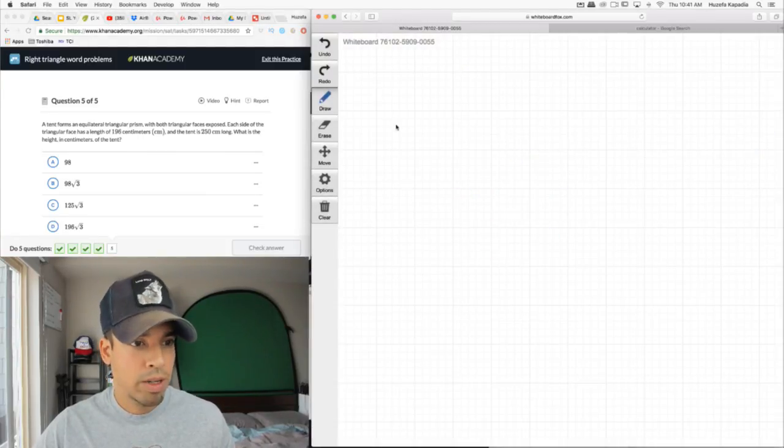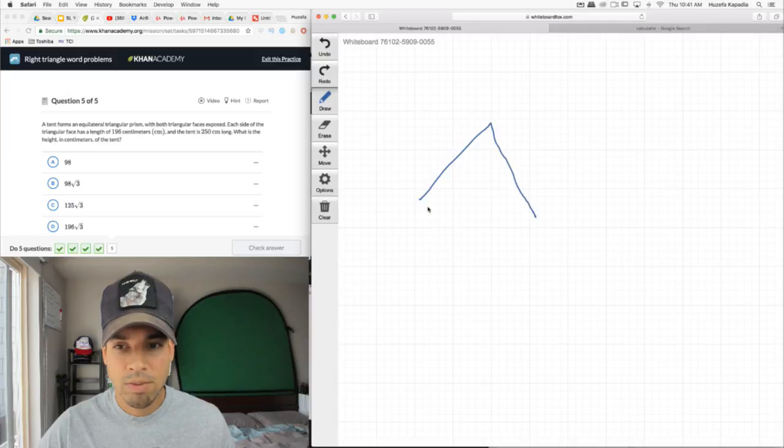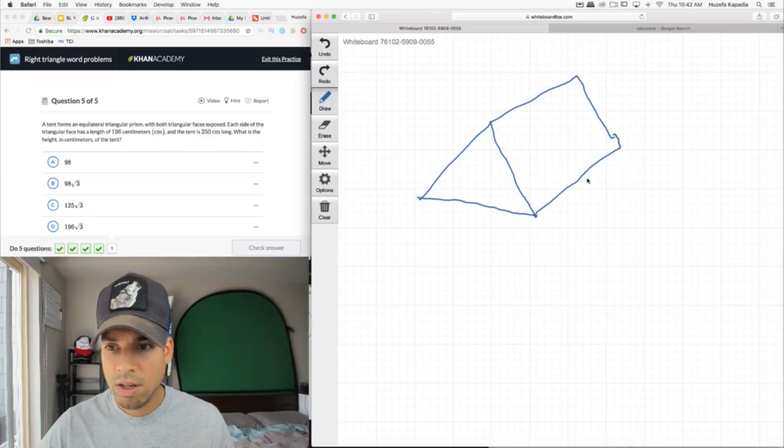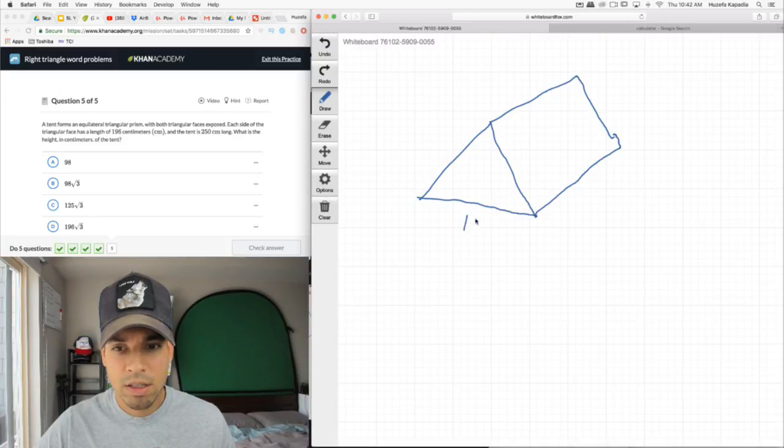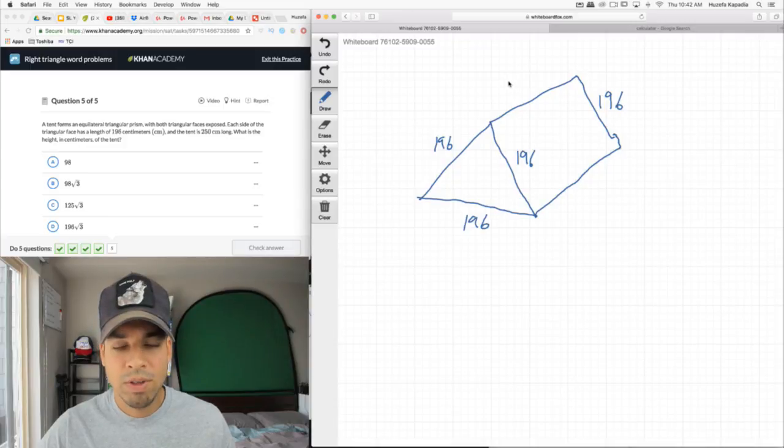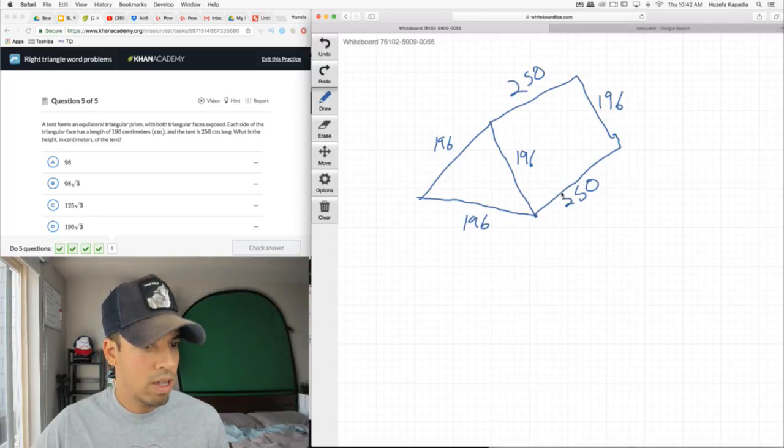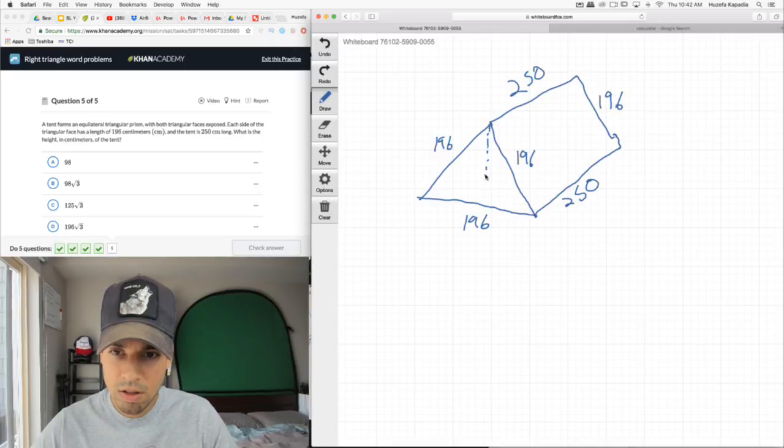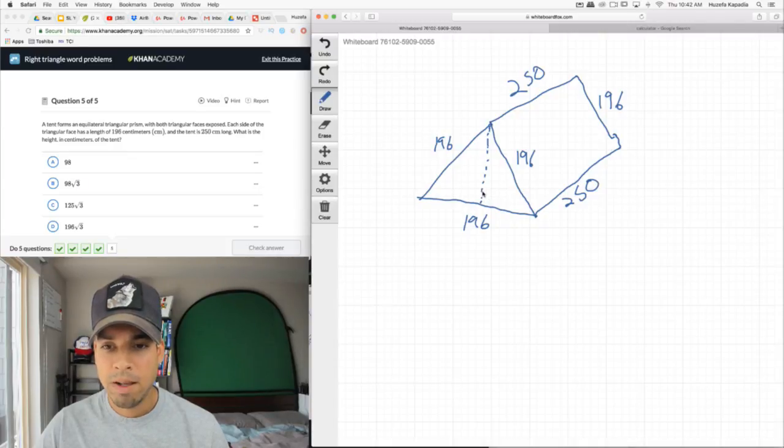All right, last question. No diagram, so we've got to make one. A tent forms an equilateral triangular prism with both triangular faces exposed. Each side of the triangular face has a length of 196, and the tent is 250 centimeters long. What is the height in centimeters of the tent? This value is irrelevant. We got a right triangle here, because that height goes straight down, it's perpendicular.